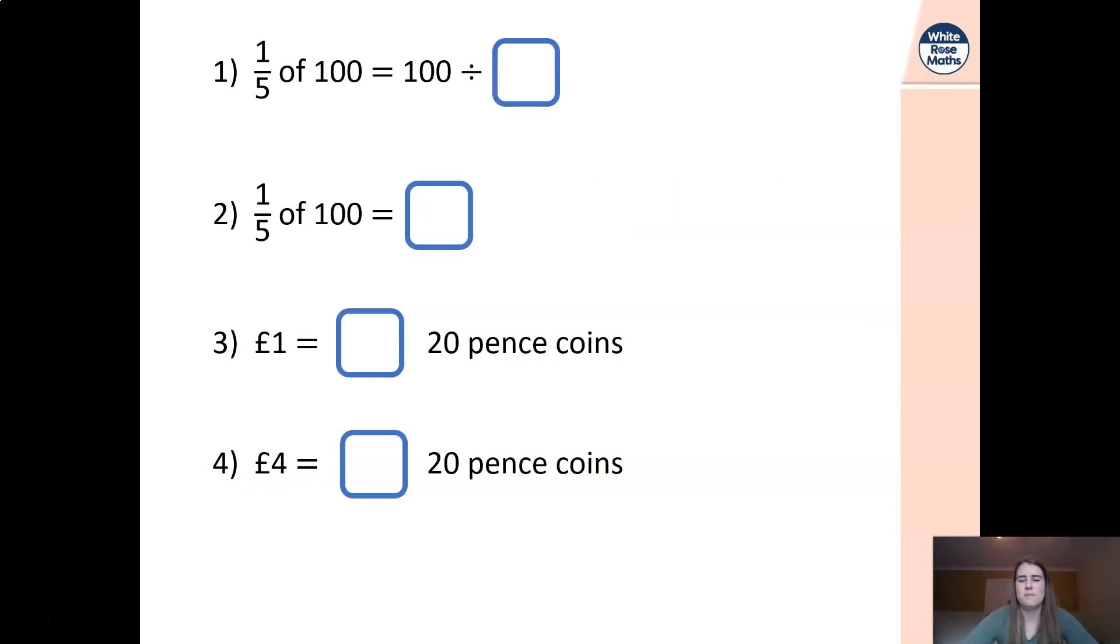Quick test then of your knowledge, based on what we've done this week so far. Find one-fifth of 100 is the same as 100 divided by what? I might have sneakily just told you the answer to that one, then tell me what a fifth of 100 is. One pound is the same as how many 20p coins, and four pounds is the same as how many 20p coins. Think about how you get from one to four. That might help you work out the answer without working anything out. Pause the video, get your timer out, and have a go.